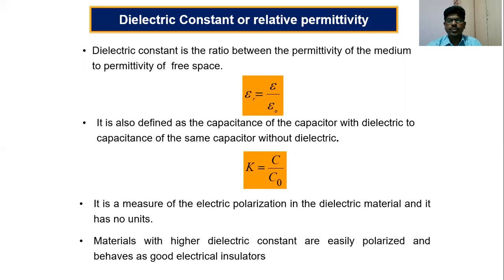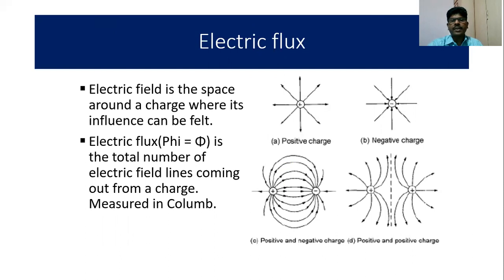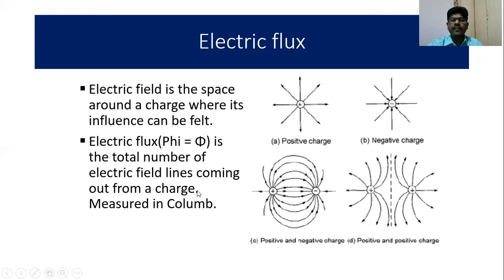Next we shall see what is electric field and electric flux. You can see a positive charge and a negative charge. For a positive charge the field lines are drawn outward — if you take a unit positive charge and place it close to a positive charge, it experiences a force of repulsion. Whereas if you place that unit positive charge close to a negative charge, it experiences a force of attraction. Electric field is the space around the charge where its influence can be felt. Electric flux is the total number of electric field lines coming out from a charge and is measured in coulombs.